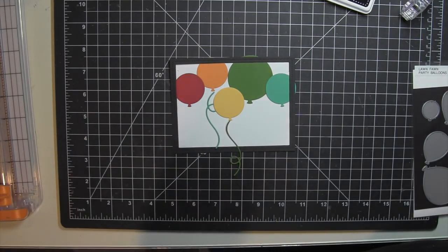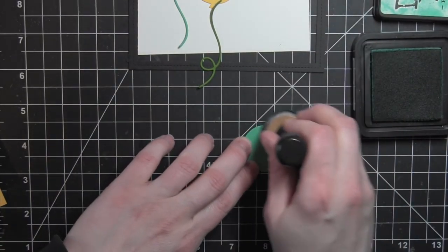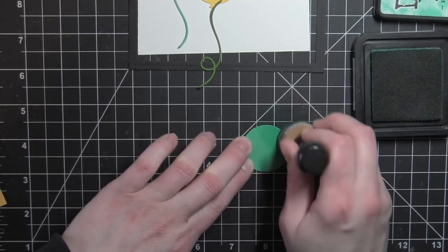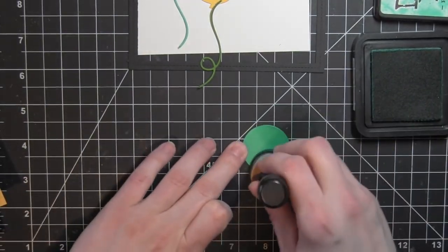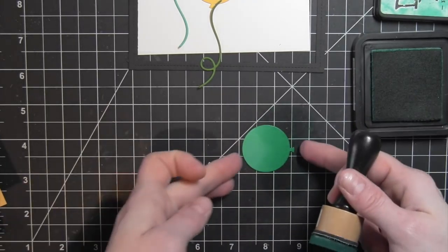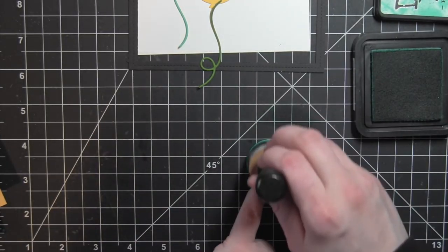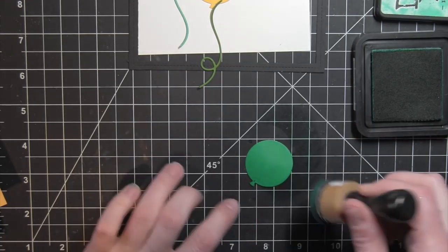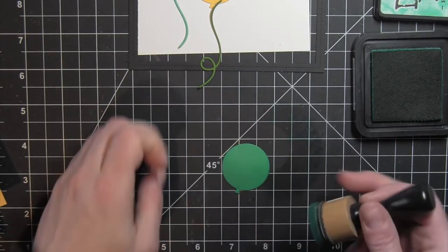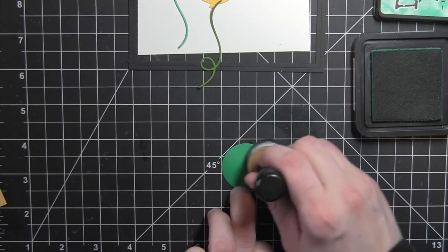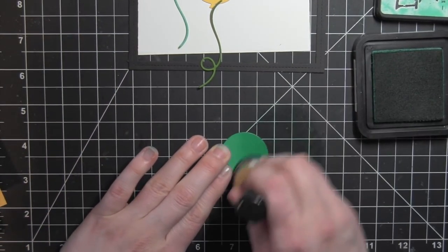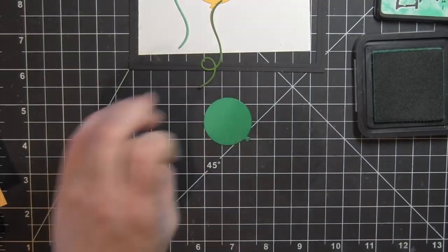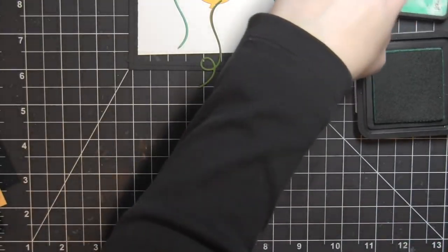Once I have them laid out the way I want them to look, I'm going to take some distress inks and do tone-on-tone distressing to add a little bit of an ombre effect or tone-on-tone effect so that it gives a little bit of dimension to the balloons. For the blue balloon, I'm using Peacock Feathers Distress Ink, and each one of these is going to have the distress ink near the bottom of the balloon.